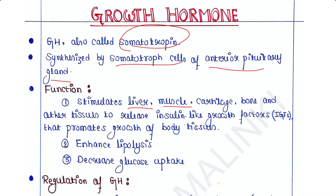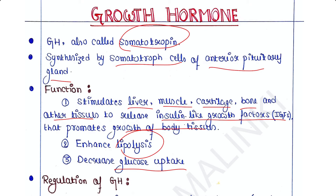Growth hormone stimulates the liver, muscle, cartilage, bone, and other tissues to synthesize and secrete insulin-like growth factors, or IGFs, which in turn promote growth of body tissues. GH also acts directly on target cells to enhance lipolysis and decrease glucose uptake by cells, which in turn increases blood glucose level.